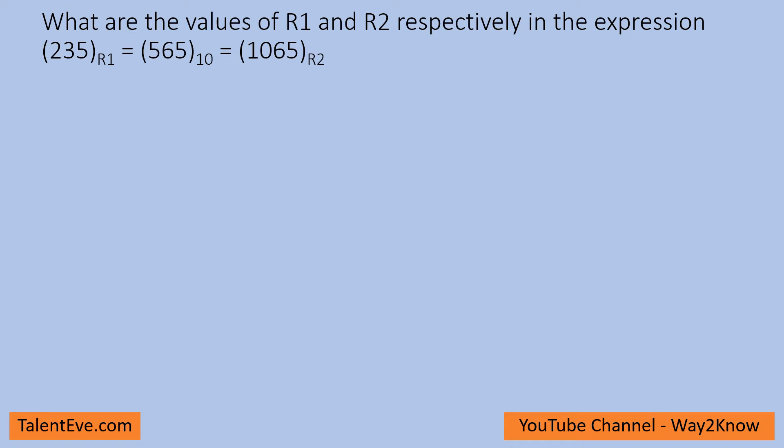Let's see how to solve this problem. Basically, there are three numbers given in three different bases. The decimal has been revealed as 565, whereas the two other base systems have not been revealed, and we have to find out those base systems. We can try to convert this into decimal and see how it is converting.